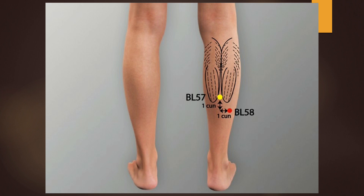Bladder 58 is used if the pain is in the leg between the bladder and gallbladder channel, not clearly in one channel or the other. Location: on the posterior aspect of the lower leg, behind the external malleolus, 7 cun directly above Bladder 60, 1 cun inferior and lateral to Bladder 57. This point is the luo-connecting point of the urinary bladder meridian. Functions: expels wind damp, harmonizes excess above and deficiency below, activates the meridian, alleviates pain. Luo-connecting points of one meridian can communicate with two meridians; they treat diseases of the collaterals and can be used to treat chronic diseases, especially chronic diseases of the zangfu organs. Needling: perpendicular insertion 0.7 to 1 cun.